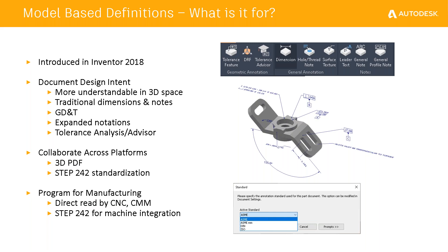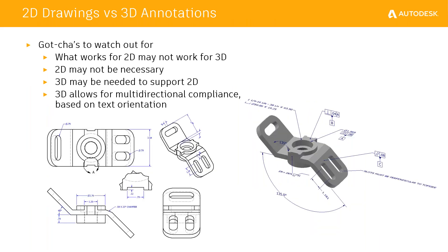The interface is a separate tab in Inventor for annotations with its own set of commands — not the same commands used in sketches or drawings to create dimensions. It has its own dimension, hole, and thread note commands. It is standard driven. If you open an older model and go to apply a tolerance or dimension, you may see a dialogue asking what standard you want to adhere to for these dimensions. You can choose ASME, ASME millimeter, DIN, or ISO. You can also set this in the document settings of your model.